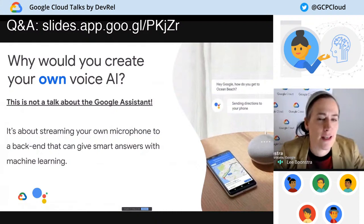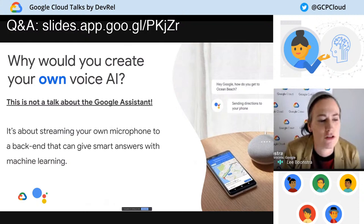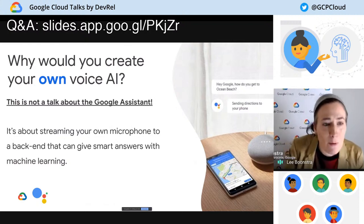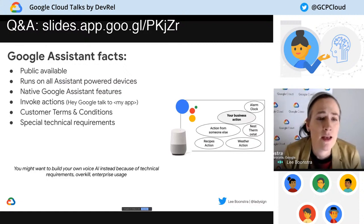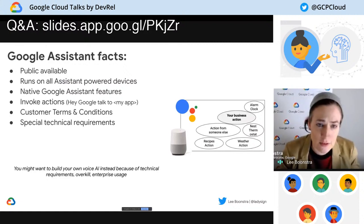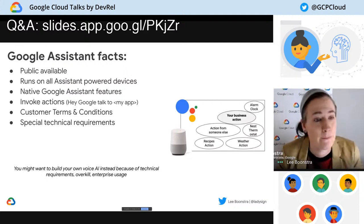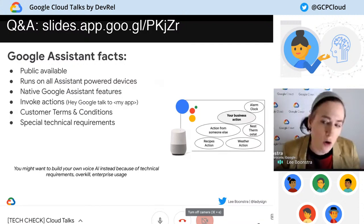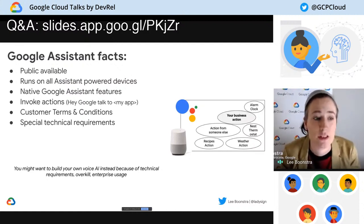But why would you build your own voice AI if we have a Google Assistant? Why should you do all this effort to build it yourself? Well, there are some good reasons for that. When you build a Google Assistant app — what we call an Action — you need to invoke it with the wake words by saying 'Hey Google, talk to my app.' Then your application is publicly available and it runs across all other apps from other people, next to the native features from the Google Assistant. But it will run on all Google Assistant powered devices — a Google Home, a smart TV, or a watch.